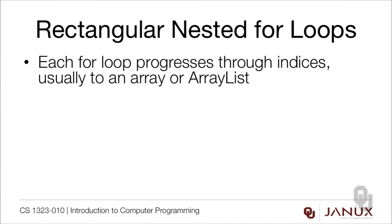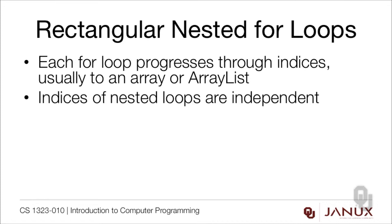For rectangular loops, each for loop — and I'm saying for loop here because they often are, but they don't have to be; while loops and for loops are completely equivalent — these loops progress through indices, usually for an array or array list. The indices of the nested loops are independent, meaning the counting in the outer for loop and the counting in the inner for loop aren't depending on each other.